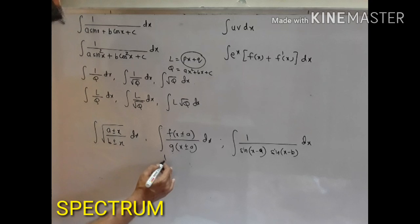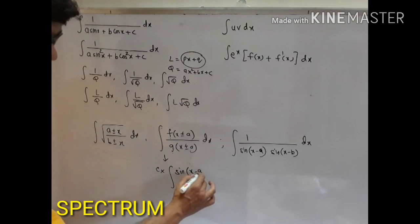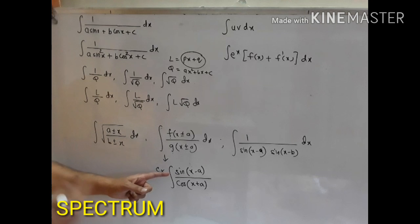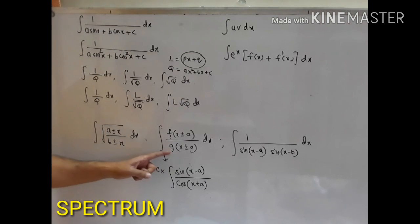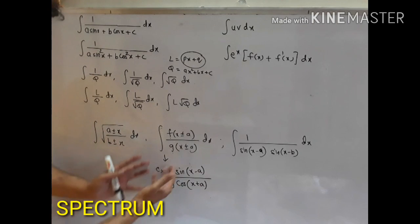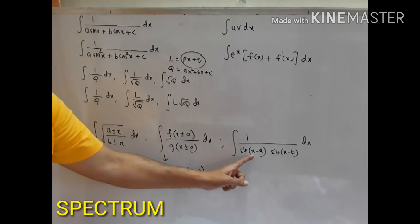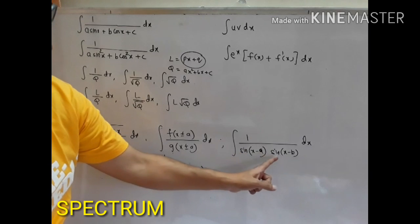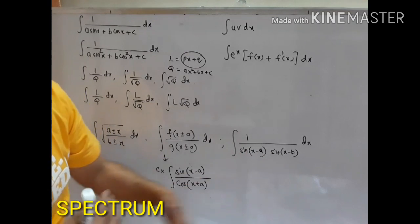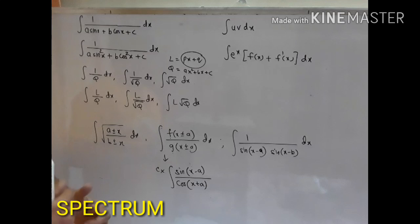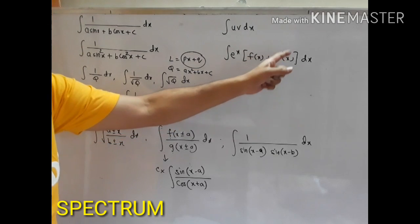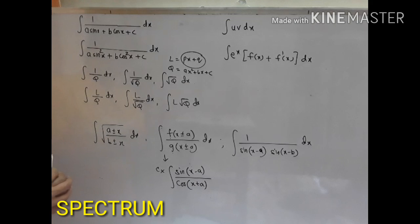There are also problems involving root of (a ± x) divided by (b ± x), and functions where f and g are strictly sine or cosine — for example sine(x minus a) divided by cos(x plus a), or combinations of sine/cosine. Then 1 by (a·sin(x minus a)·sin(x minus b)), where the factors could be sine-sine, cos-cos, or sine-cos. Problems based on the UV product rule are very very important, as are problems based on e^x times (f(x) plus f'(x)) dx. These are the selected types you must practice.